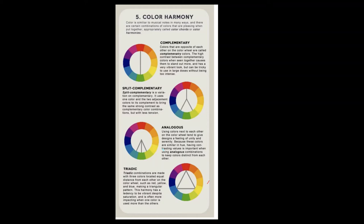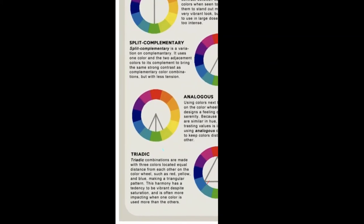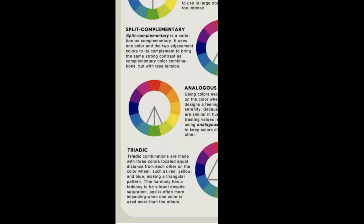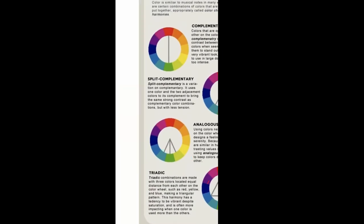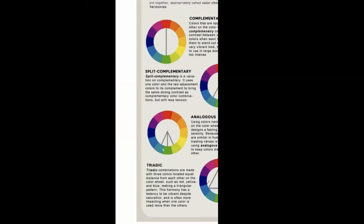Triadic combinations are made with three colors located at equal distances from each other on the color wheel, such as red, yellow, and blue, making a triangular pattern. The harmony tends to be vibrant despite saturation, and is most impactful when one color is used more than the others. I'll explain what saturation means in the further slide.